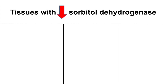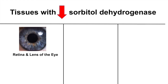This brings us to the problem. If there are tissues with decreased sorbitol dehydrogenase content or activity, they will have problems processing the sorbitol if it is produced. One area of the body very susceptible to this is the retina and lens of the eye, which has very low sorbitol dehydrogenase activity. This can lead to diabetic retinopathy. During diabetes, high glucose concentrations increase sorbitol production, but because the retina and lens have decreased sorbitol dehydrogenase activity, sorbitol cannot be converted to fructose and accumulates, causing osmotic damage to the retina and lens.